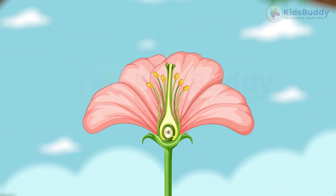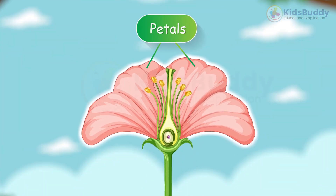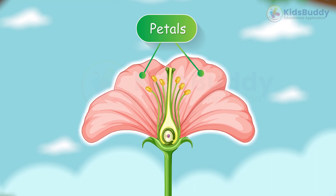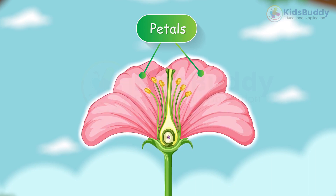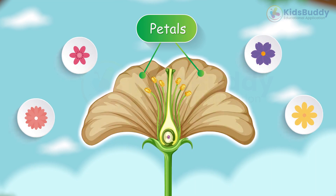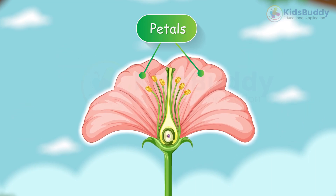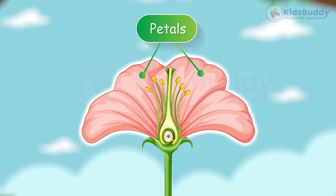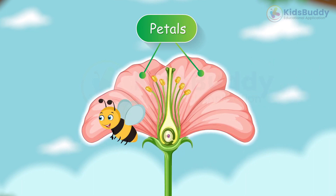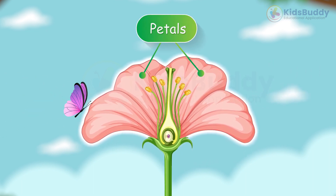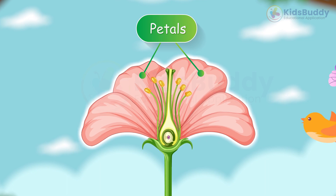Petals are the most eye-catching part of the flower. They come in different colors and shapes, and their main function is to attract pollinators such as bees, butterflies, and birds.